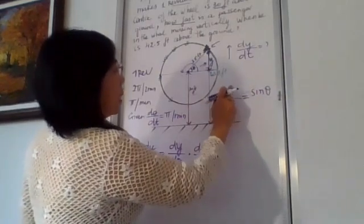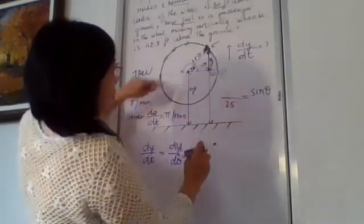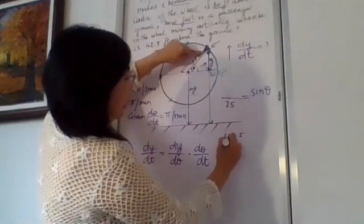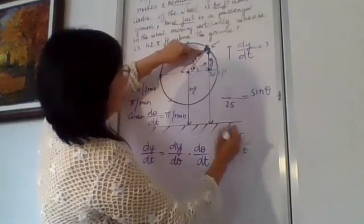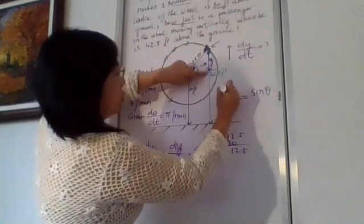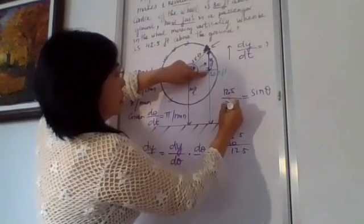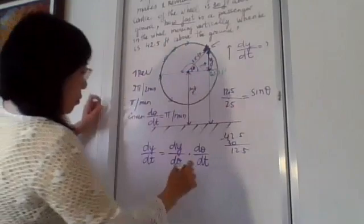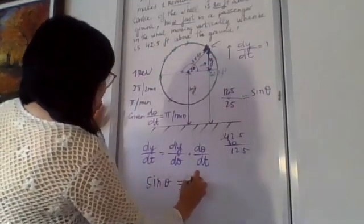We know what y is. Our y is 42.5 minus 30, which is 12.5. So the distance from the center to the passenger's height is 12.5. We substitute y as 12.5, and 12.5 is half of 25, so sine theta equals one half.